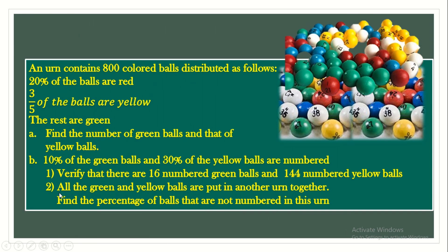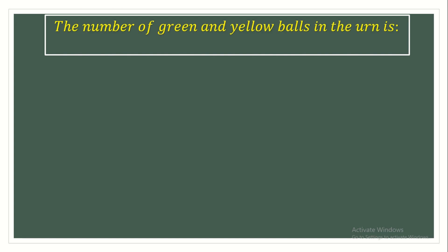Now for part two. All the green and yellow balls are picked up and placed in another urn together. This urn will only contain green and yellow balls. Find the percentage of balls that are not numbered in this urn. First, the total number of green and yellow balls in this urn is 160 plus 480, which gives us 640 balls.